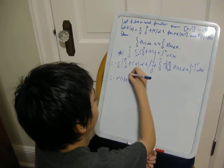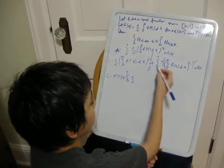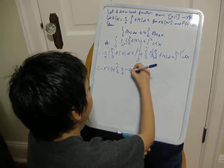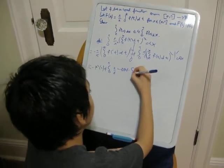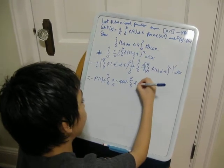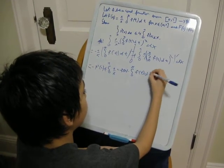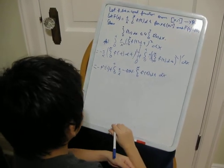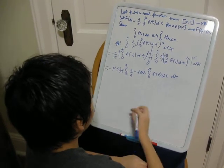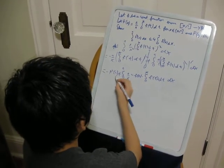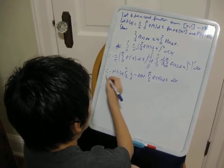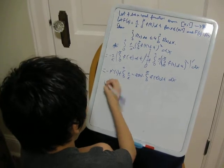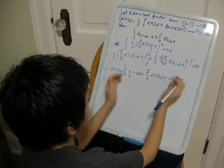This is equal to 1 over x times this. Let's see what this is. This is 2 times f of x times the integral from 0 to x of f of t dt dx. But this is positive, right? Then all this is negative.